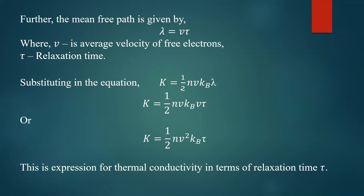Substituting into the thermal conductivity equation: k equals one-half n v k_B lambda. We substitute lambda equals v times tau, and finally we get thermal conductivity k equals one-half n v squared k_B times tau. So lambda is replaced by v times tau, giving v squared. This is the expression for thermal conductivity in terms of relaxation time. You can also express it in terms of mean free path — remember this for solving problems.